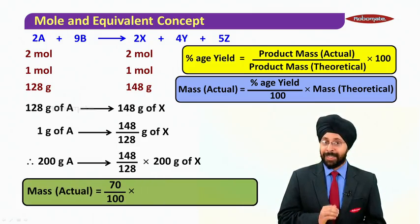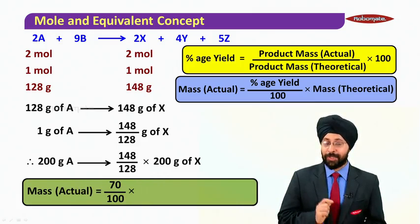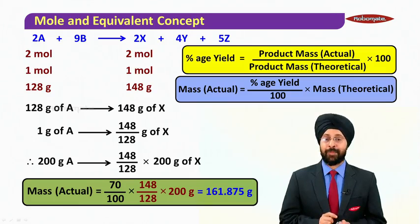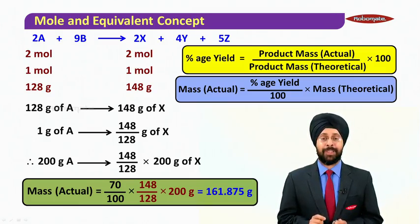Now putting in the value, yield is 70%. So 70 by 100 times this much mass, and that is going to give us 161.875 grams.